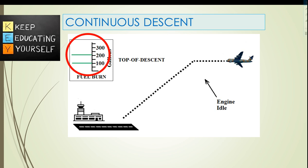The ideal CDA starts at the top of descent and ends when the aircraft starts the final approach and follows the glide slope to the runway. Typically, CDAs are not possible all the time, not for all arriving flights, and not always for the whole descent profile. But at more and more airports, measures are taken to use CDA to the extent possible and to gradually increase the percentage of CDA flights.